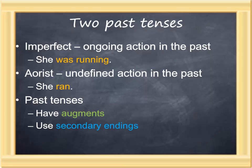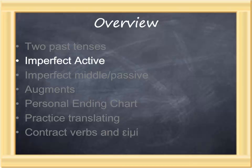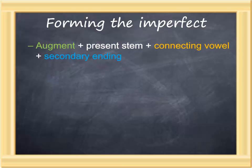Chapter 21 focuses on one of these two past tenses, the imperfect, which describes ongoing action in the past. The imperfect is formed by putting together four parts: an augment, plus the present stem—so the imperfect is built on the present—a connecting vowel, omicron or epsilon, and then a secondary ending. So now, in addition to looking at the end of the verb and the middle of the verb, we have to look at the beginning of the verb in order to correctly parse its forms.